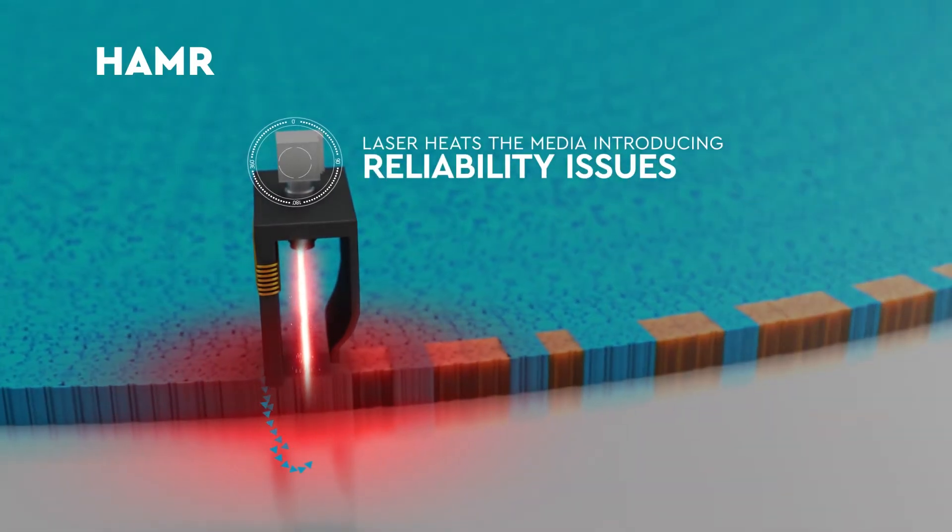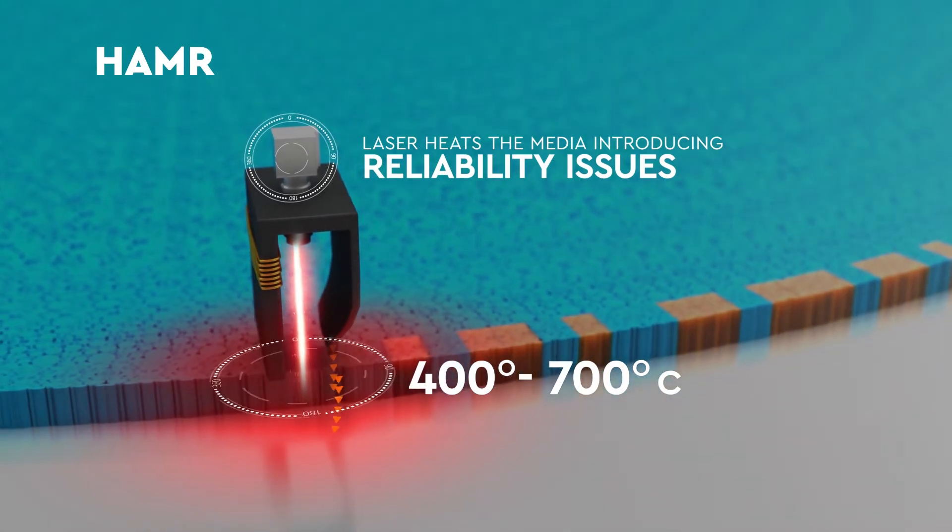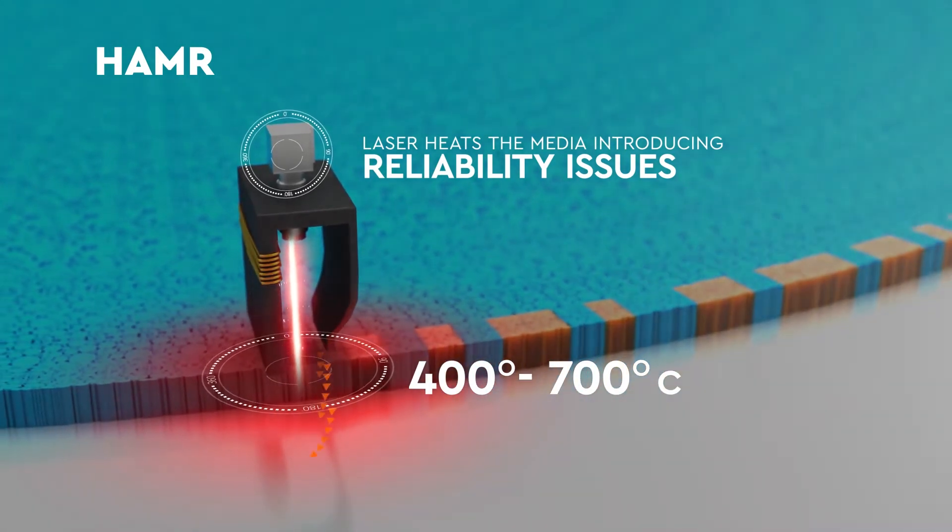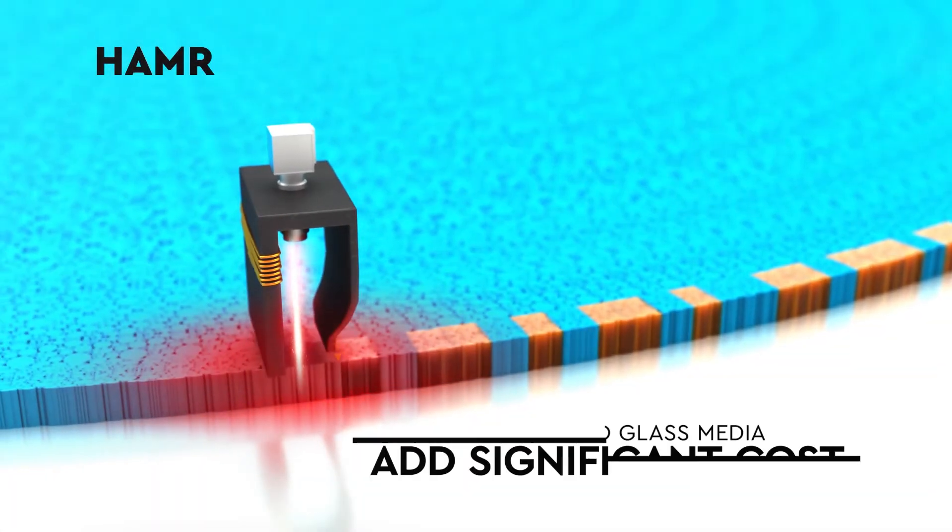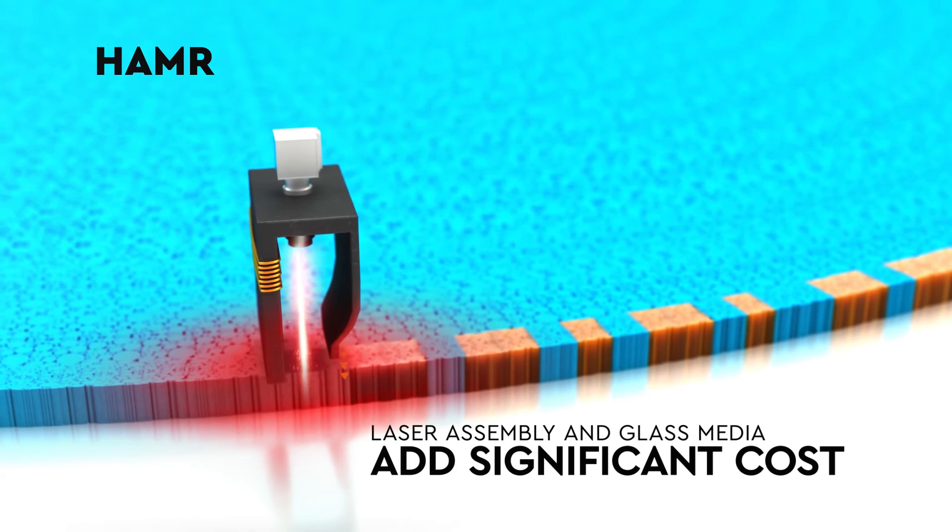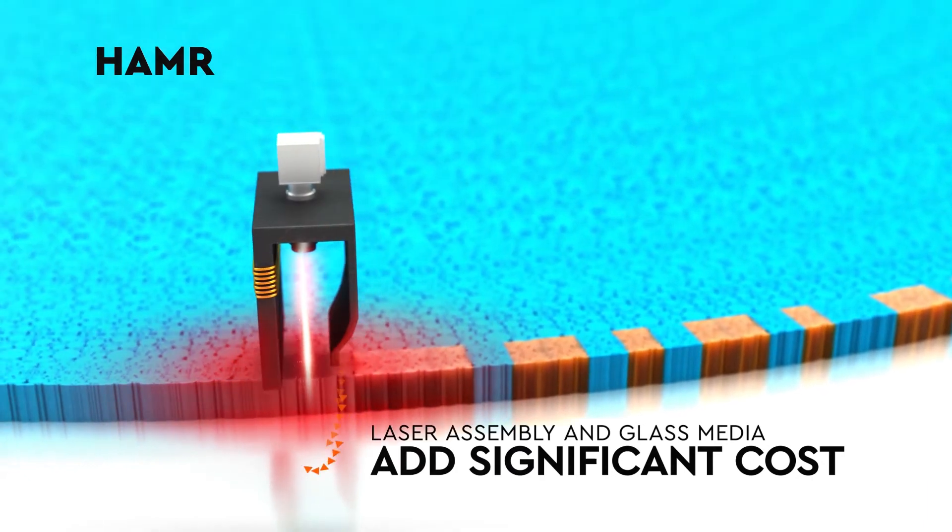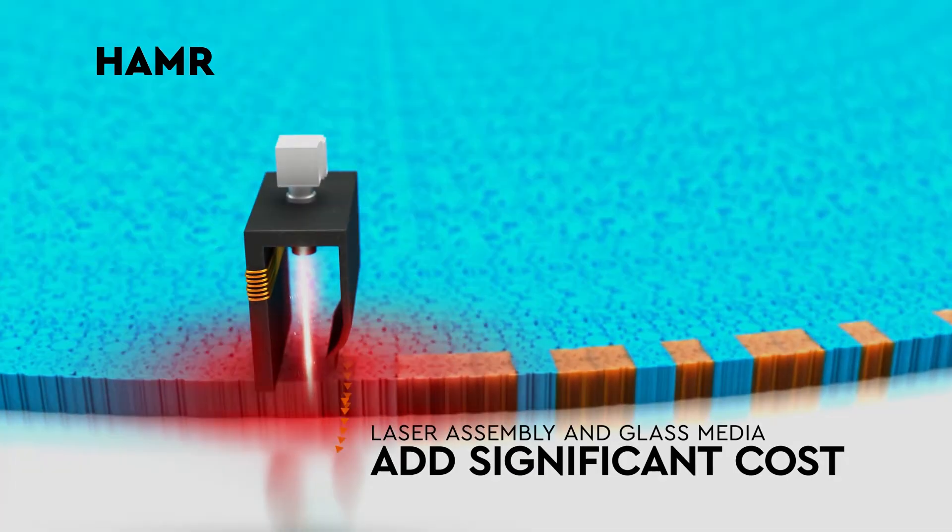HAMR technology uses an expensive laser diode to rapidly heat the high coercivity media to lower the energy barrier and enable the write. While cost is a real barrier, the bigger concern is low reliability caused by the high heat.